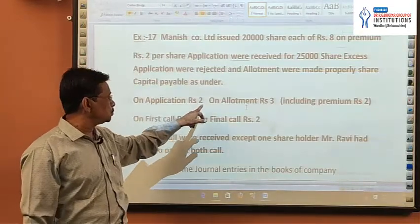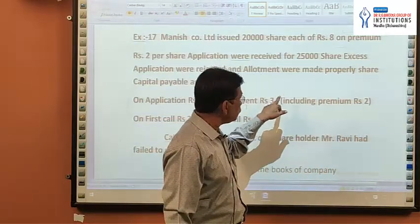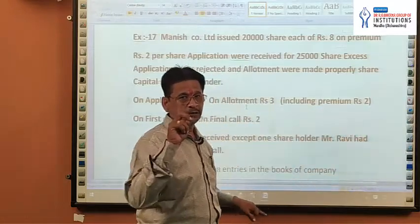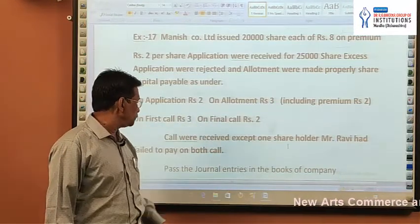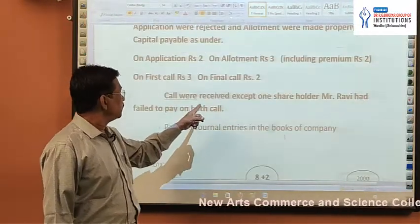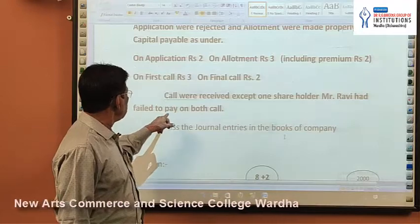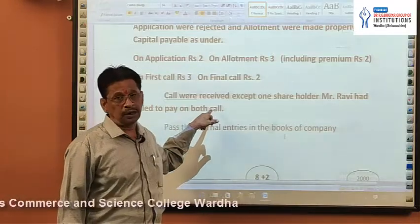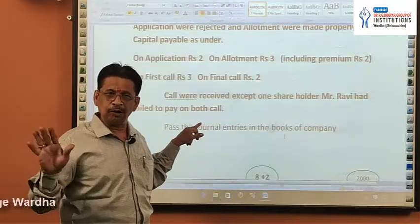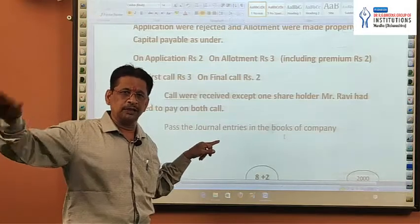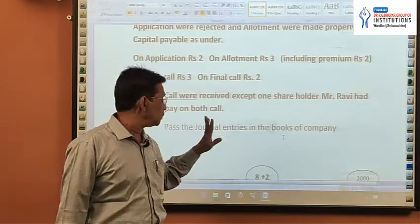On application Rs.2, on allotment Rs.3 including premium of Rs.2. So out of Rs.3, Rs.2 is a premium, so Rs.1 is the allotment money. Then first call Rs.3 and final call Rs.2. The company has received all amounts except one shareholder, Mr. Ravi, who had failed to pay on both calls — both call means first and final call. Application is not a call, allotment is not a call; calls mean first, second, third, etc.